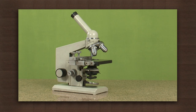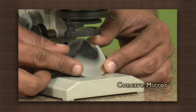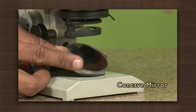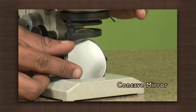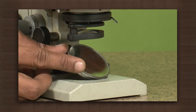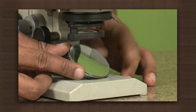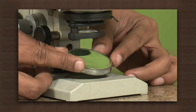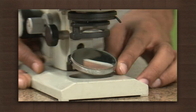Here is a microscope. We will start from the bottom. At the base you will find a concave mirror which reflects light from a light source like the sun to the stage. Modern microscopes have their own light source at the bottom, in which case this mirror is replaced by the light source.